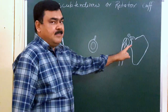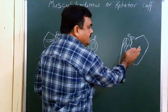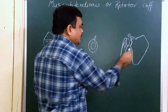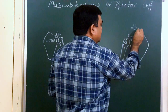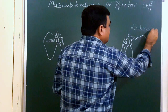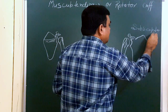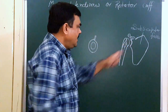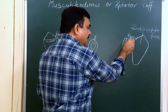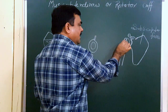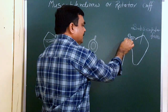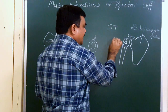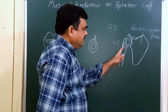In this diagram you can see the subscapular fossa. Here is the supraglenoid tubercle. Here is the greater tubercle and the lesser tubercle. And this is the bicipital groove.